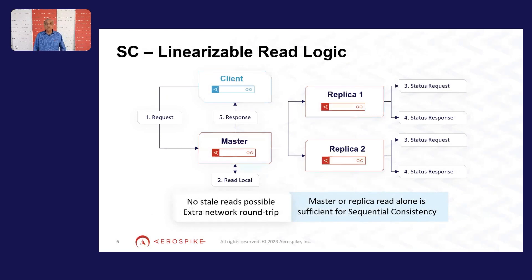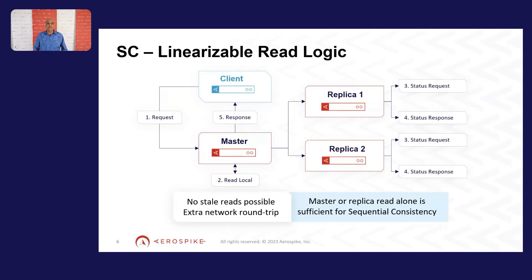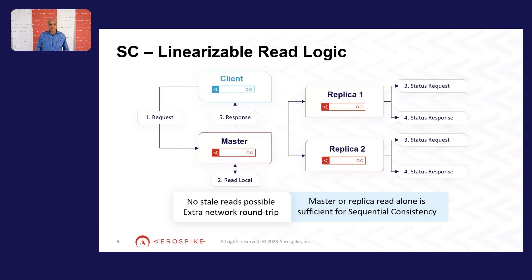Aerospike supports strong consistency, meaning we can pick various policies for reads. The most stringent policy is linearizability. To linearize every read with the writes that are happening, the guarantee is that any write the system has agreed on — a read coming in after the write, no matter where it comes from — will be linearized after that committed write. Every read, which typically goes to a master node, has to confirm that the replicas and master are agreed on the status of the record. That is important for linearizable reads.